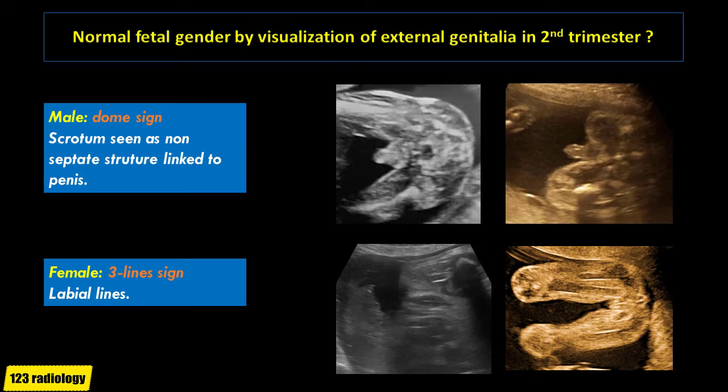In another study, the sonographic determination of male genitalia was based on identification of a non-septate, dome-shaped structure at the base of the penis called the dome sign, indicating the scrotum. Female external genitalia were identified based on visualization of the three-line sign, representing the labia majora and minora. Better visualization of fetal sex can be achieved in the second trimester. On the upper images, the penis is seen connected to the dome-shaped structure of the scrotum in male fetuses, while on the lower images, the three-line sign of labial lines is better visualized, denoting female fetus.